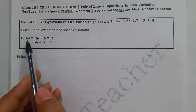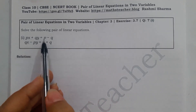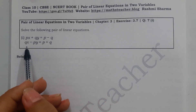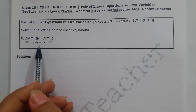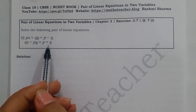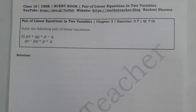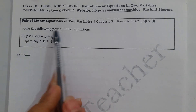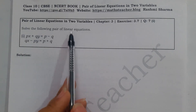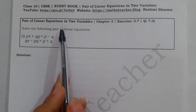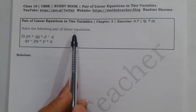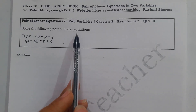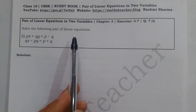The first equation is px plus qy equal to p minus q, and the second is qx minus py equal to p plus q. In this chapter we have 4 methods to solve such equations, and no specific method has been given here.